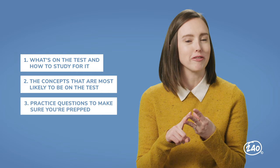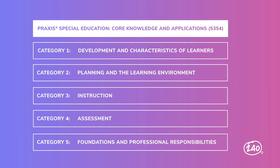This Praxis special education exam consists of five content categories: Development and Characteristics of Learners, Planning and the Learning Environment, Instruction, Assessment, and Foundations and Professional Responsibilities. Together, categories two and three make up about half of your test, so let's go through those first.